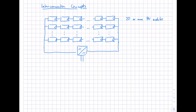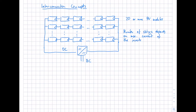We have the DC part, and here is the AC part, so we can connect our PV system to the grid. The number of strings depends on the maximum current of the inverter. This concept is called a central inverter concept, because we have one big inverter with a large nominal power that must handle all these modules — the high voltage and, of course, the large current — and then feed the electricity directly to the grid.